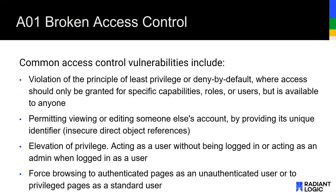Broken access control's vulnerabilities revolve around people being able to create, read, update, or delete things they should not be able to — whether that be through getting admin privileges when they shouldn't or just having those capabilities without working for them. Failure to address this will directly impact confidentiality and integrity of the system. If all data is allowed to be read by anyone, we lose confidentiality, and we lose integrity when permitted rights are suddenly violated.